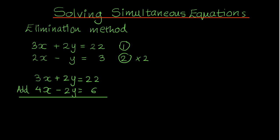So let's add: 3x plus 4x gives me 7x. Then 2y plus minus 2y gives me 0, so that cancels out. And 22 plus 6 is 28. So I've got 7x equals 28, and in order to get x I divide both sides by 7.